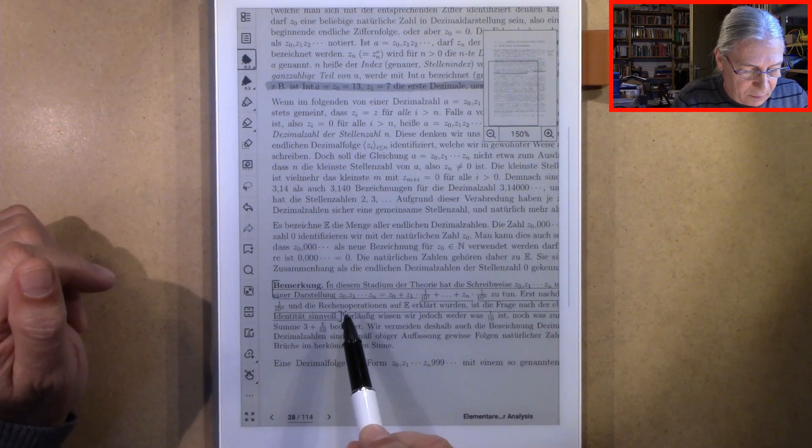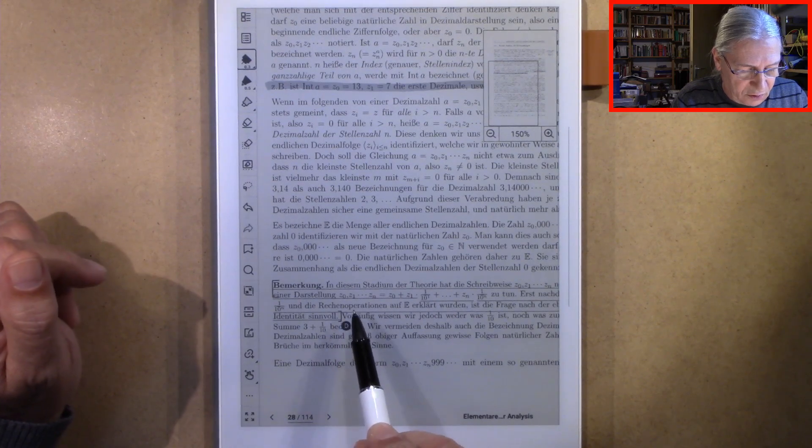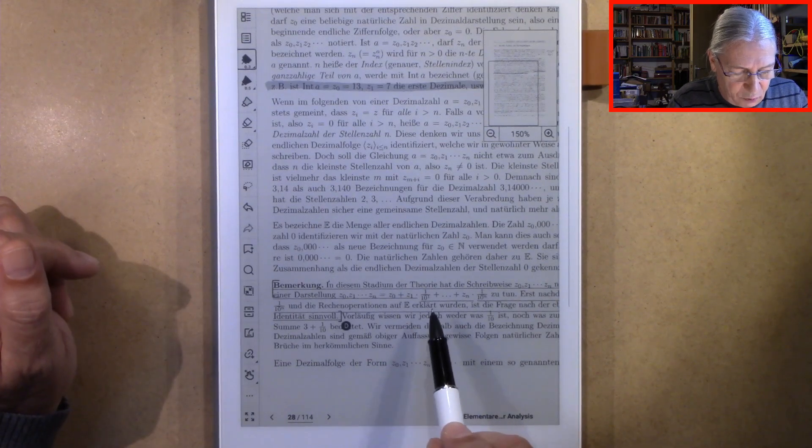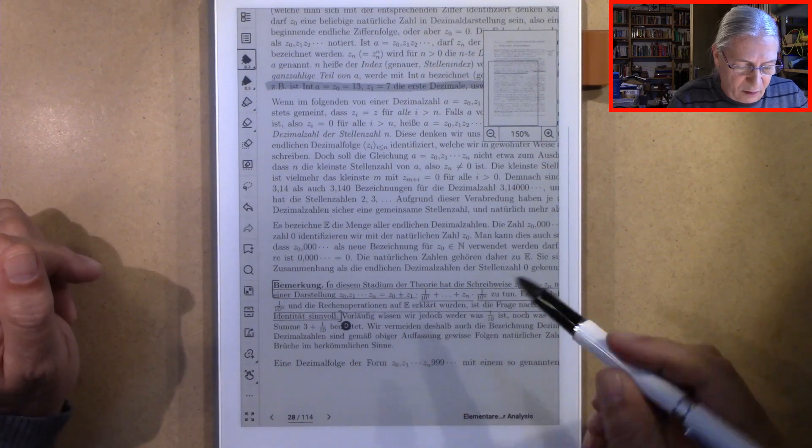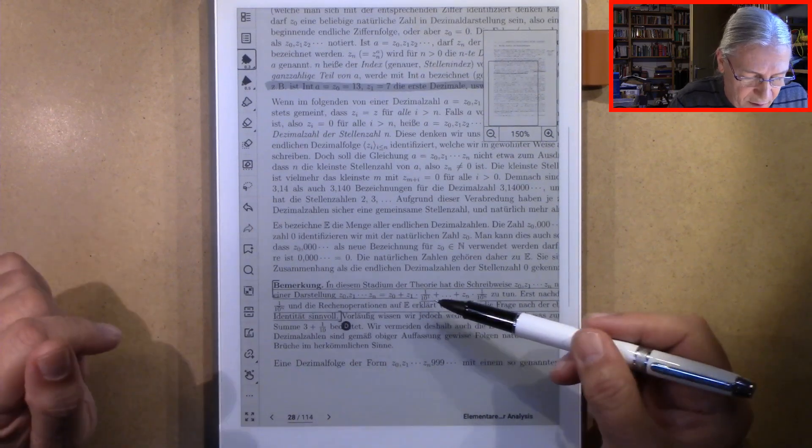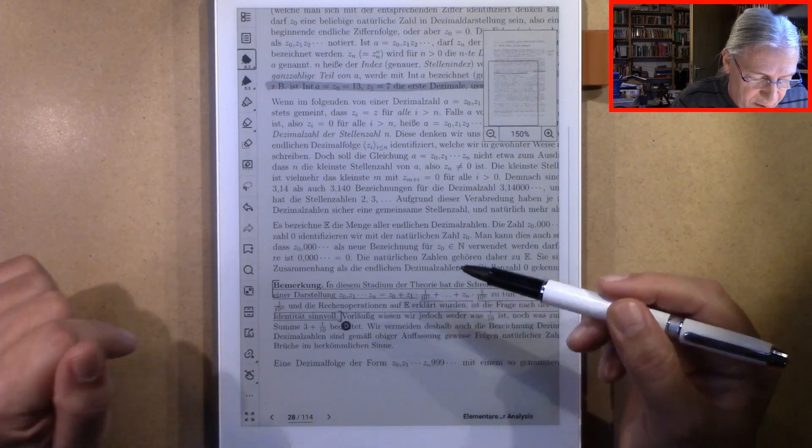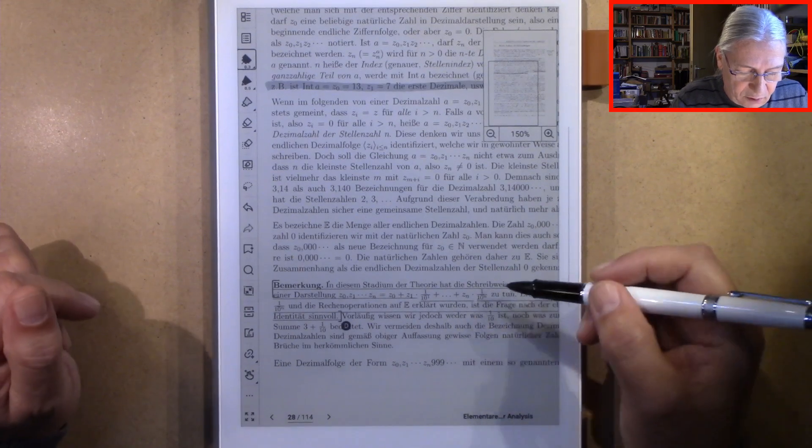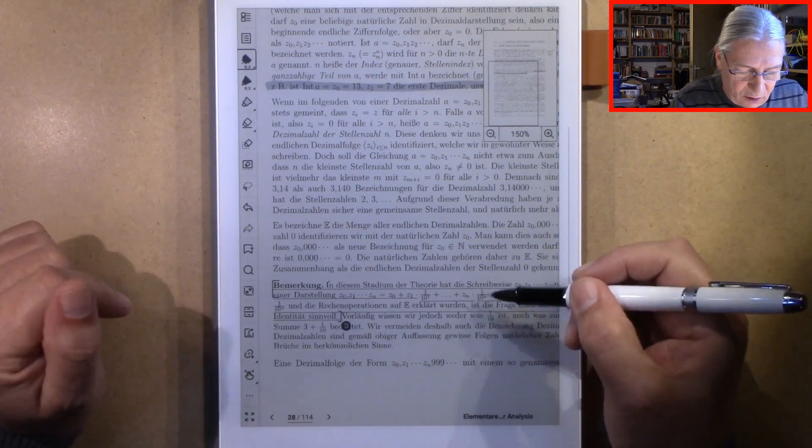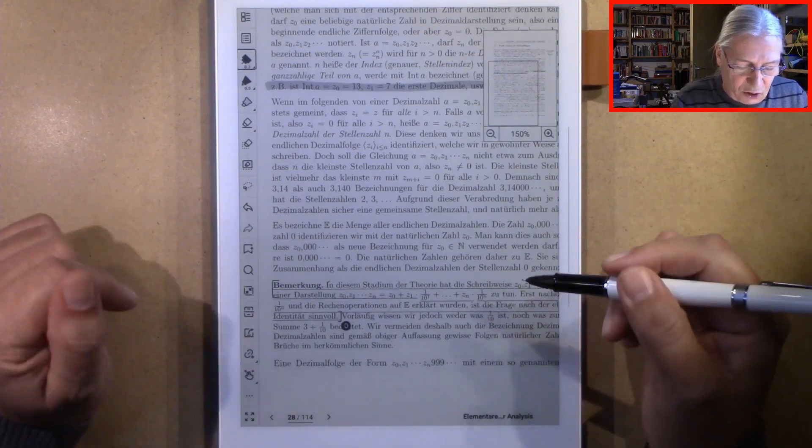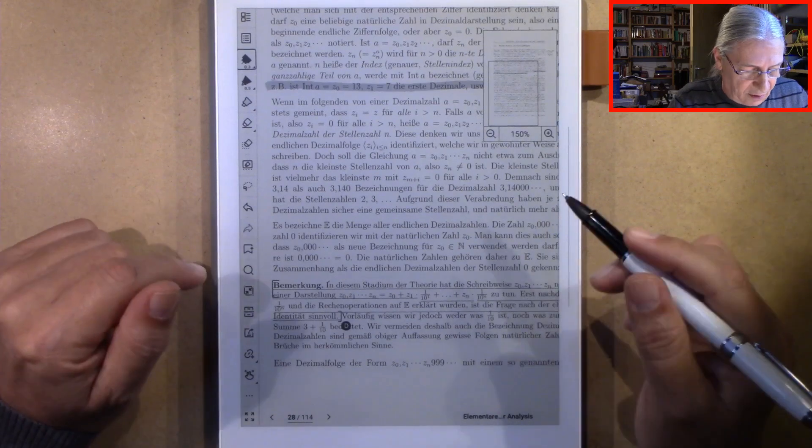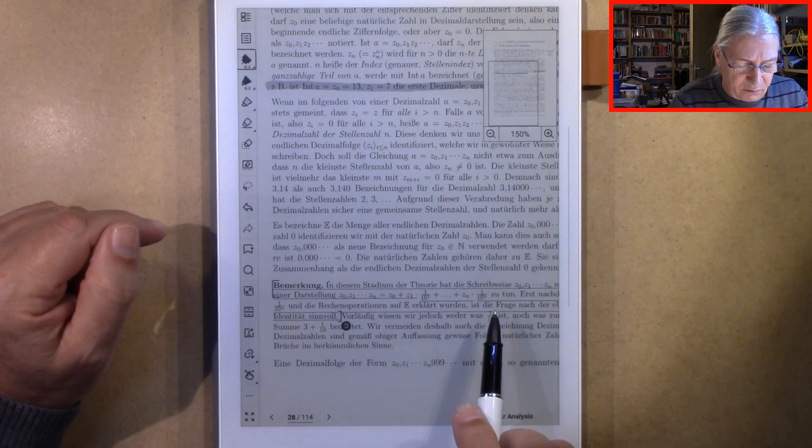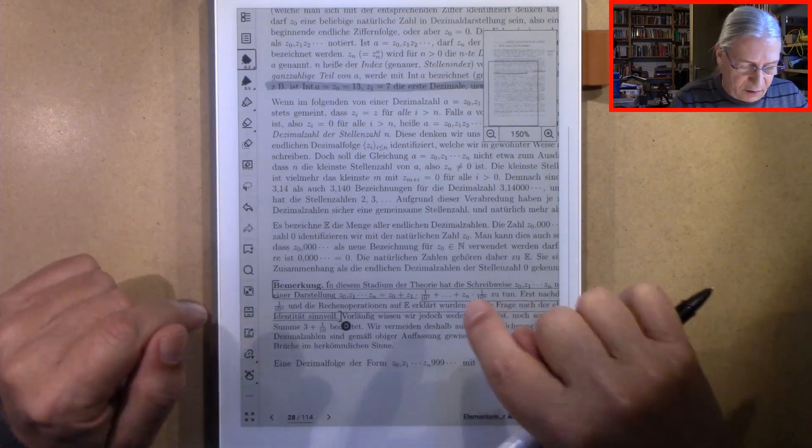It has subscripts here Z0, Z1, through Zn, and we have a quotient here 1 over 10 to the power of 1, and this goes further on to Zn times 1 over 10 to the power of n. I have digested this passage here, and let's have a look what the result is.